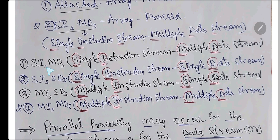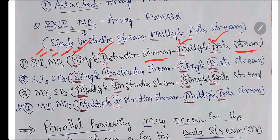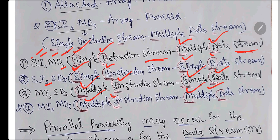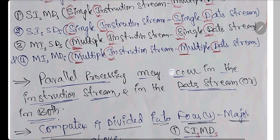I have marked with a red pen for shortcuts. S-I stands for Single Instruction, M-D stands for Multiple Data. Stream means flow of data or information. So the four types are: SISD - Single Instruction Single Data, SIMD - Single Instruction Multiple Data, MISD - Multiple Instruction Single Data, MIMD - Multiple Instruction Multiple Data. These are the four types.